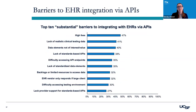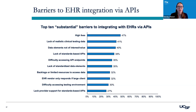We asked about the biggest barriers to integration. About 47% of companies rated high fees as a substantial barrier to integrating with EHRs. Then we had lack of realistic testing data, not having data elements of interest or value, and lack of standards-based APIs — all commonly rated as substantial barriers by about 40% of the sample. About a third also cited lack of standardized data elements and difficulty accessing API endpoints.